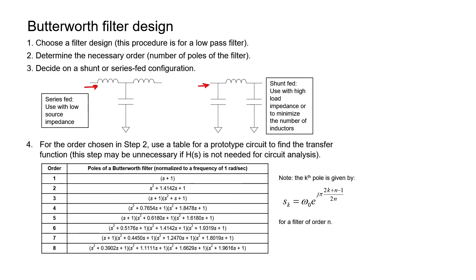The next step is optional. If you want to know what the transfer function of the filter would be, you can refer to this chart. We know where the positions of all the poles are for our low-pass filter, so we know what the transfer function is going to be. What we have in this table is effectively the denominator of the transfer function H(s), according to the order of the filter. You might not necessarily need to know the transfer function when designing a filter — the only thing that really matters is the filter's frequency response and roll-off.